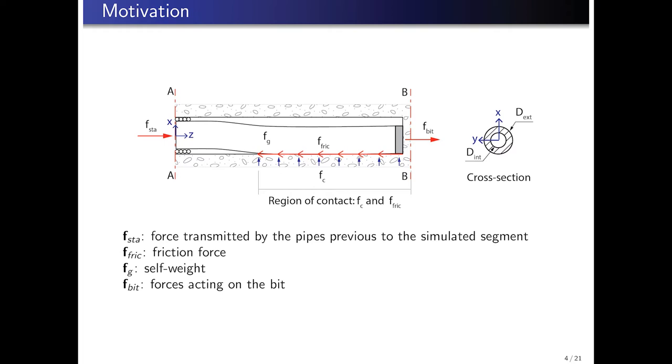The forces acting on the system are F_STA, the force being transmitted by the portion of the pipe to the left which is not being modeled. The forces related to contact and friction, F_C and F_fric. The self-weight, F_G, and F_bit, a force acting on the bit. These forces will be described with more detail further on. But first, I would like to give a glimpse at the formulation employed in the Cosserat theory of rods.